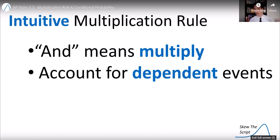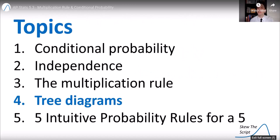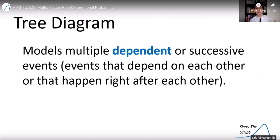Here's the intuitive rule I want you to use. And, when you hear and, that means multiply. And then always account for dependent events. So let's talk about that by using a new kind of probability diagram called tree diagram.